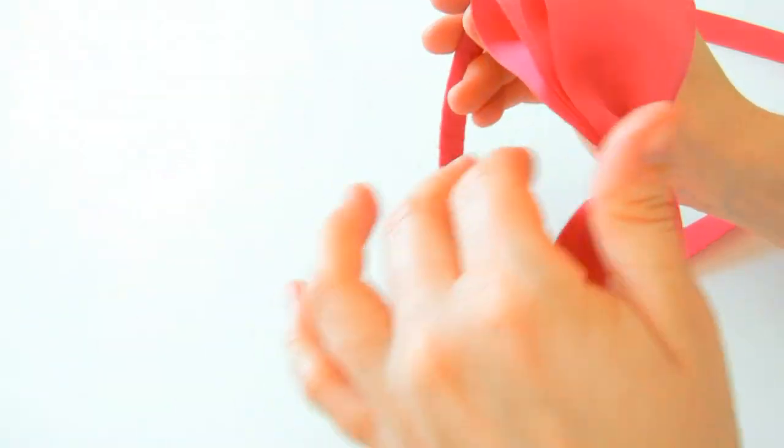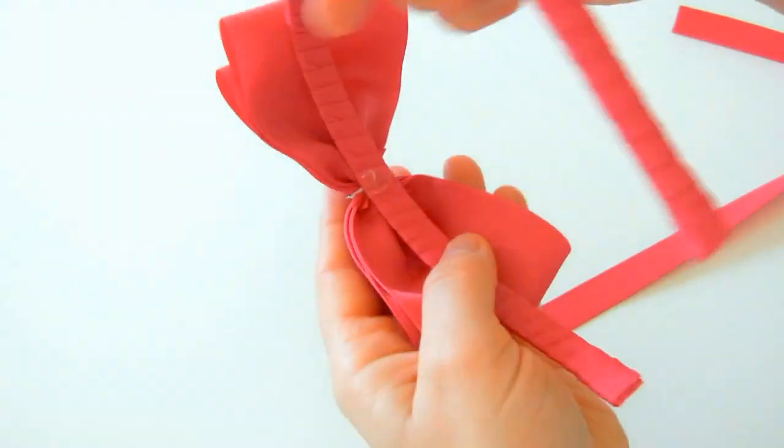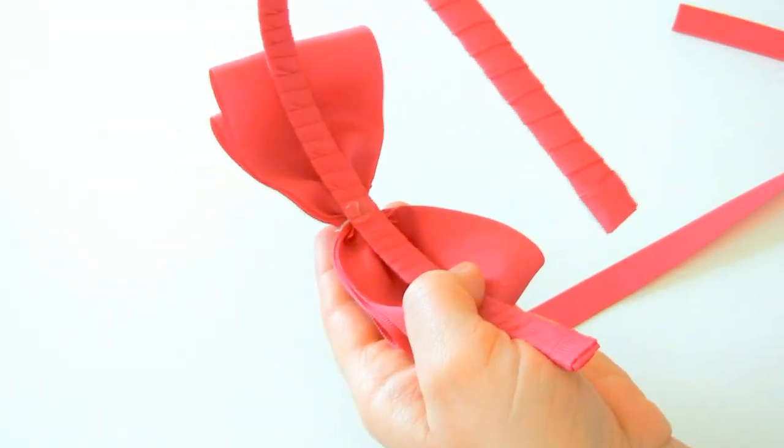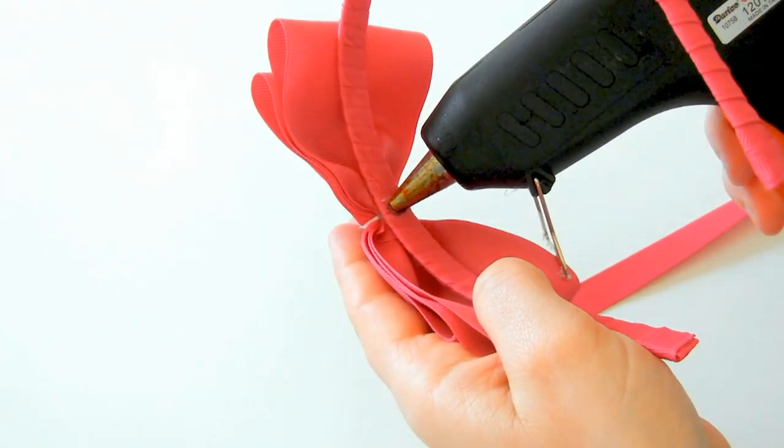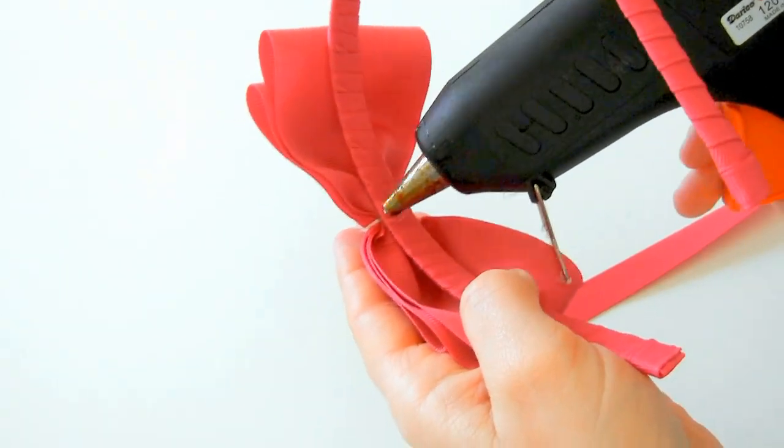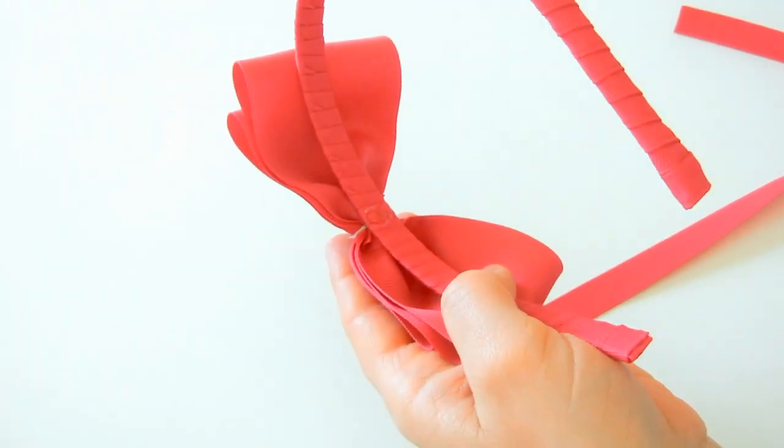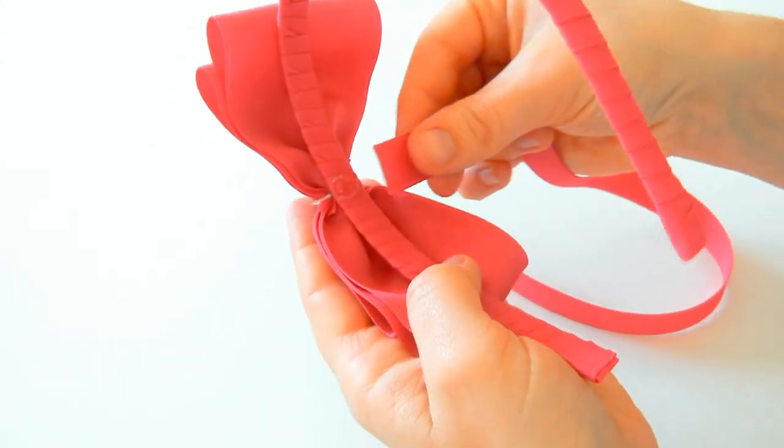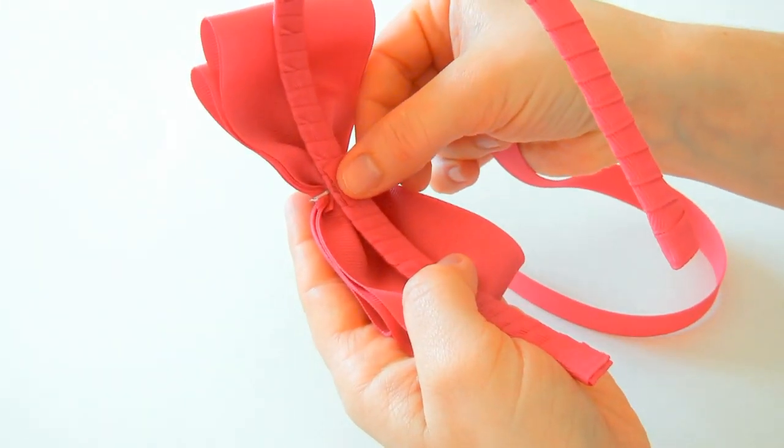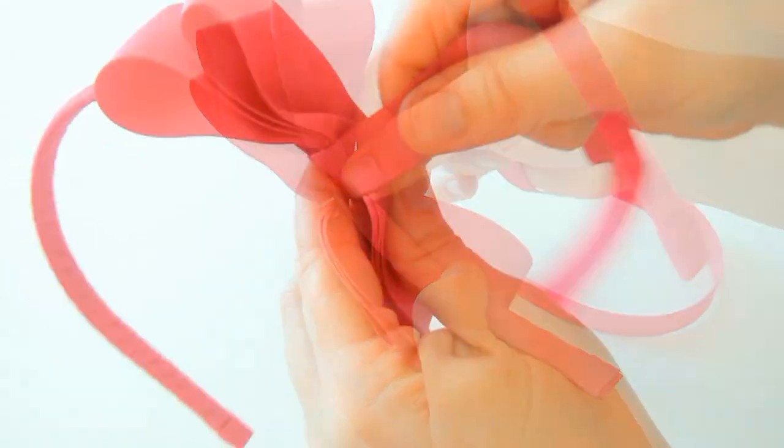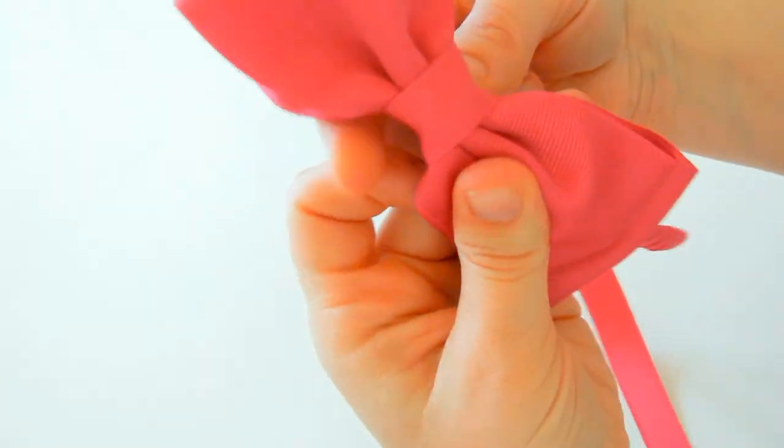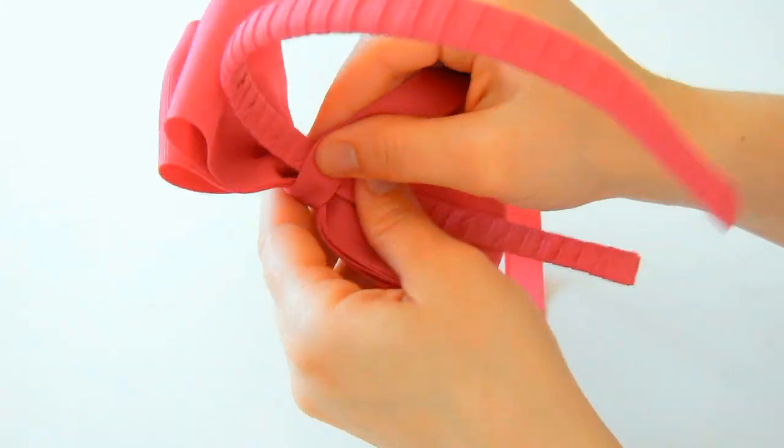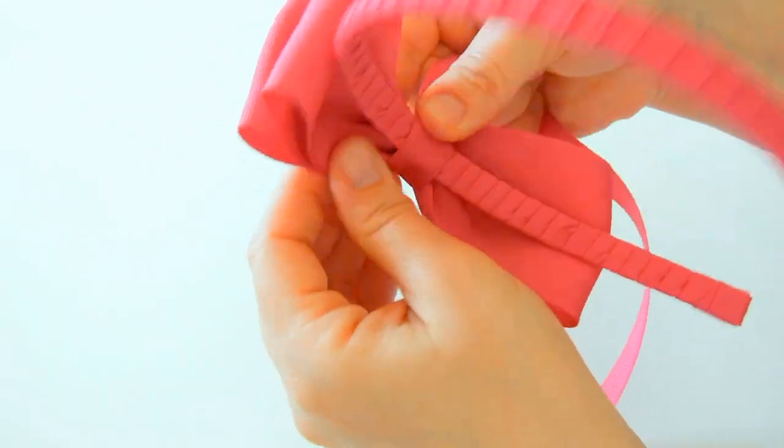Now we're going to add our center and finish up the headband. Turn your headband over, place hot glue in the center or above the center of the bow. Make sure that you have sealed one end of this ribbon, and then we're going to wrap it around.